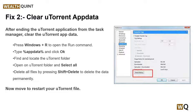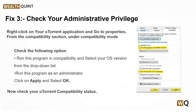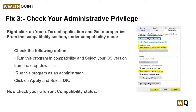Solution 3: check your administrative privileges. The uTorrent client should have the required permissions to download files without any barriers. To do this, right-click on your uTorrent application and go to Properties. From the Compatibility section, check the option to run the program in compatibility mode and select your OS version. Then enable Run this program as an administrator, click Apply, and select OK.